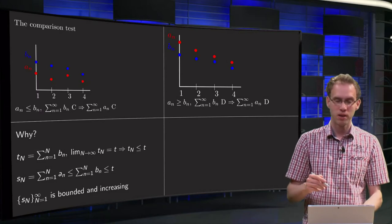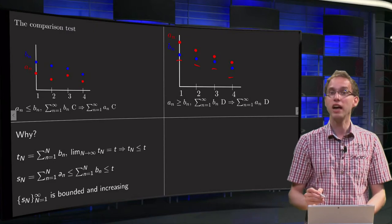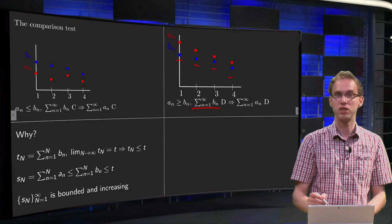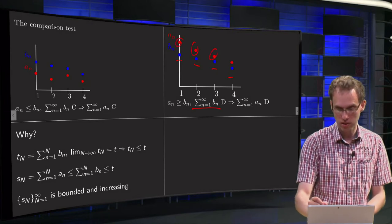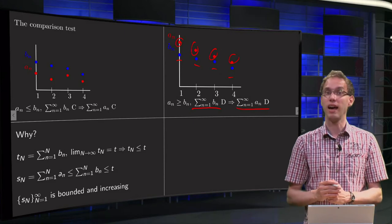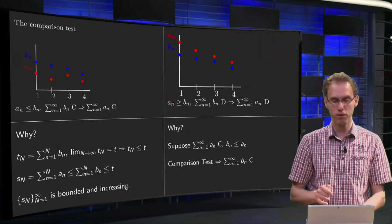Now let's do the other way around. Now we have our Bn again, here they are, and suppose now we know that the series of the Bn is divergent, and suppose now that all of the An are above that, so now they are bigger. Then I know that the series of the An has to diverge as well. From the picture it may seem obvious, but how do we prove it?